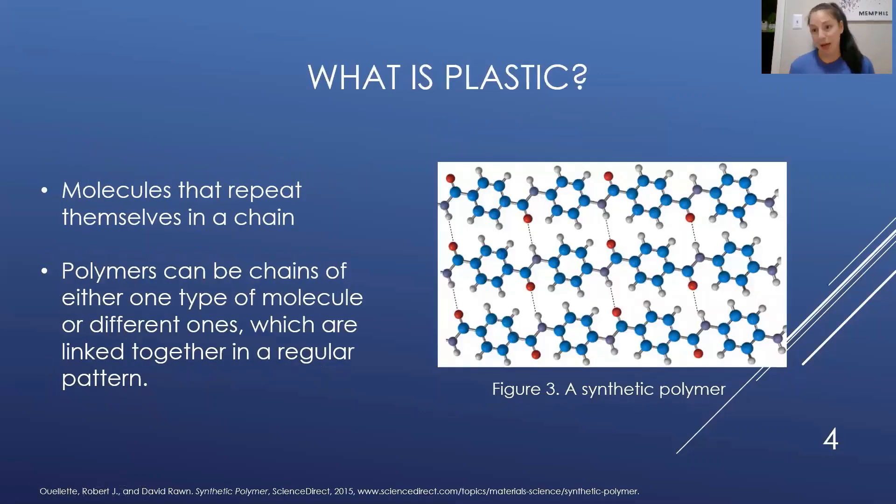So what is plastic? Plastic is made of molecules that repeat themselves in a chain. Polymers can be chains of either one type of molecule or different ones, which are linked together in a very regular pattern. As you can see on the picture on the right, it's just repeating units—you see those blue rings, those little attachment molecules, and that's what a polymer looks like on the atomic level.